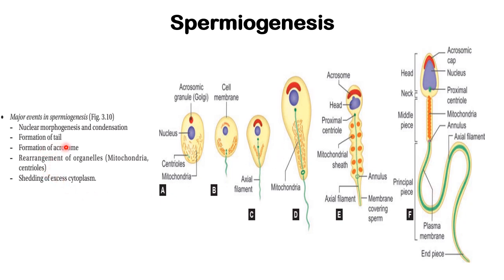Next is formation of the acrosome. The Golgi body, or Golgi apparatus, moves toward the head side and forms an acrosomal cap. This Golgi body reshapes itself toward the anterior pole of the entire cell, forming the acrosomal cap, which will be responsible for the acrosomal reaction during contact with the ovum at fertilization.